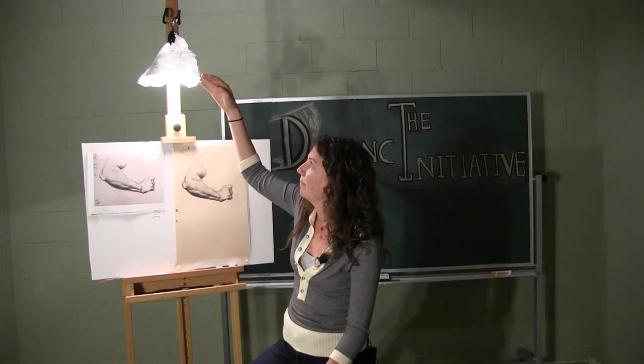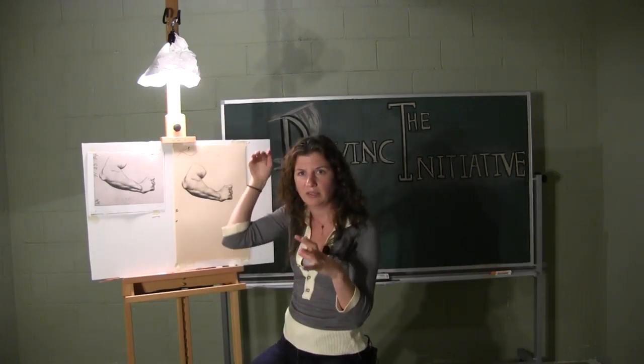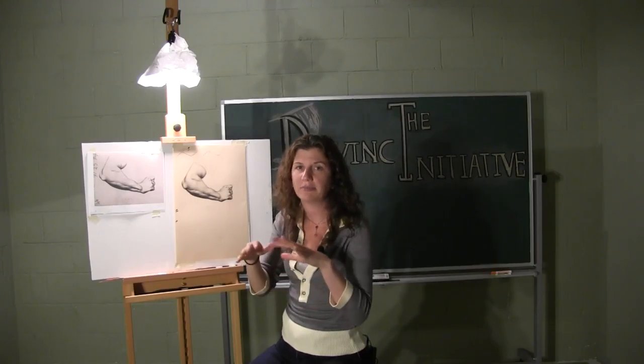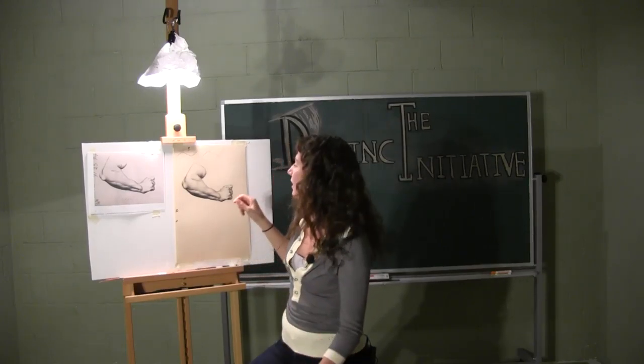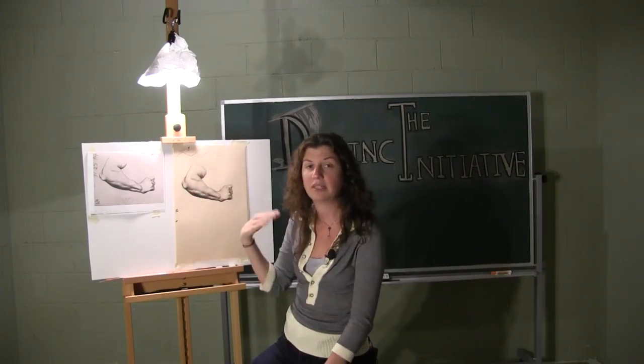So by putting some tissue paper or some other type of diffuser over your light it helps keep your light from being so stark on your page. It helps diffuse it a little bit more so that you don't accidentally make things too dark in some areas because your light source was too strong in that particular place.